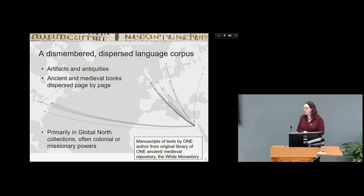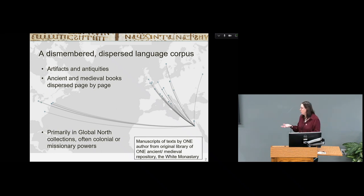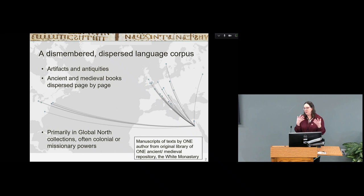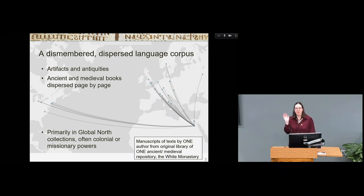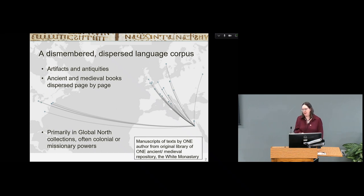The literature that we work with in my project is kind of a dismembered and dispersed corpus of literature, due to the antiquities trade. These codices of Coptic literature were treated as artifacts and antiquities, and have been dispersed primarily throughout the global north and not so much in Egypt. This map shows where texts are by one particular author from one original monastery repository in Egypt, and the author wrote from the fourth and fifth centuries.